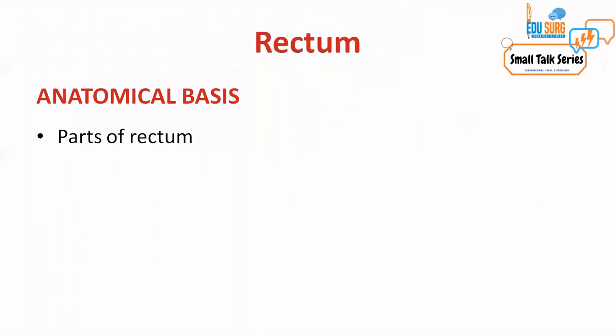When we talk about the anatomical basis of the rectum, one of the most important topics is knowing the parts of the rectum — upper, middle, and lower — how they are defined differently and why there is confusion. We will also see the most important landmark, the middle rectal valve. You can't identify it in the OT, but it helps define treatment options based on tumor location, and there are landmarks that help identify its position.